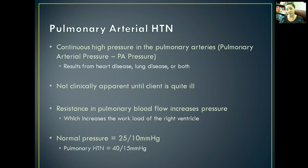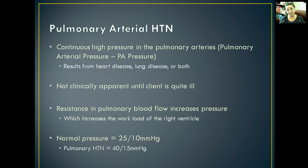Normal pulmonary arterial pressure is 25 over 10 millimeters of mercury. Pulmonary hypertension is whenever you have 40 over 15 millimeters of mercury. It's not a very big jump — only 15 in the systolic and 5 in the diastolic — so it's very important to notice the slight differences with pulmonary arterial pressures.